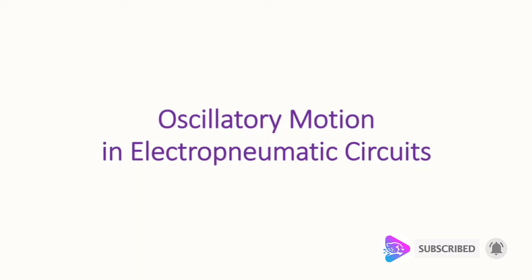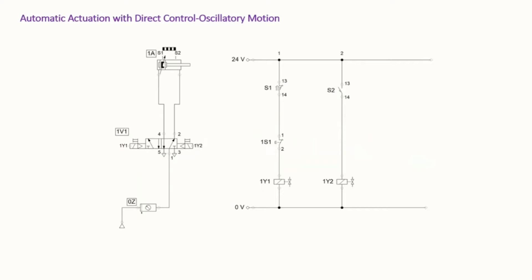We are going to focus on the design of oscillatory motion. In the next slide, I'll show you the circuit with a direct form of control. What we have here is automatic actuation with direct control for a system with oscillatory motion. As you can see, we have the air supply, air service unit, and the directional control valve with five ports in two positions. The actuation is electrical actuation, and we also have manual override. And then we are connected to a double acting cylinder.